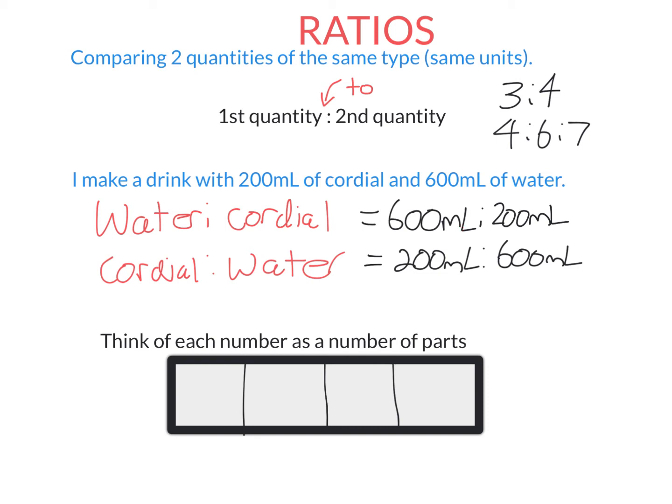We really don't need these units because they're the same. So instead, we could just write water to cordial as 600 to 200, and we could write cordial to water as 200 to 600.